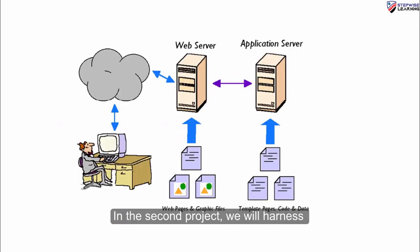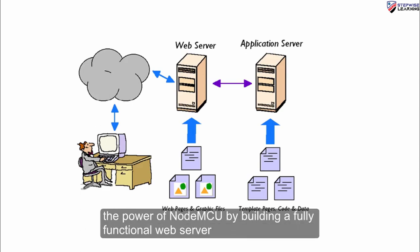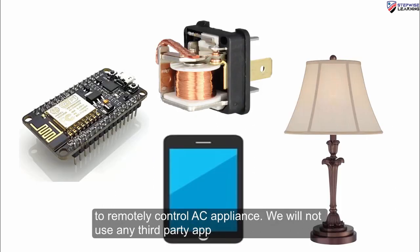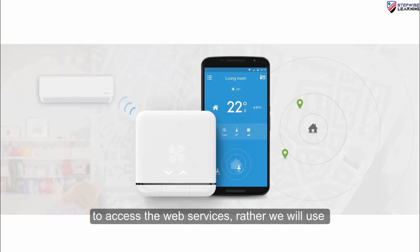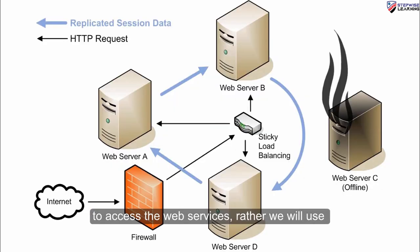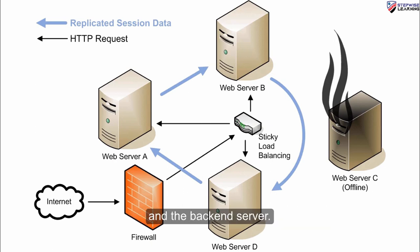In the second project, we will harness the power of NodeMCU by building a fully functional web server to remotely control an AC appliance. We will not use any third-party app to access the web services. Rather, we will use web scripting language to code the web page and the backend server.